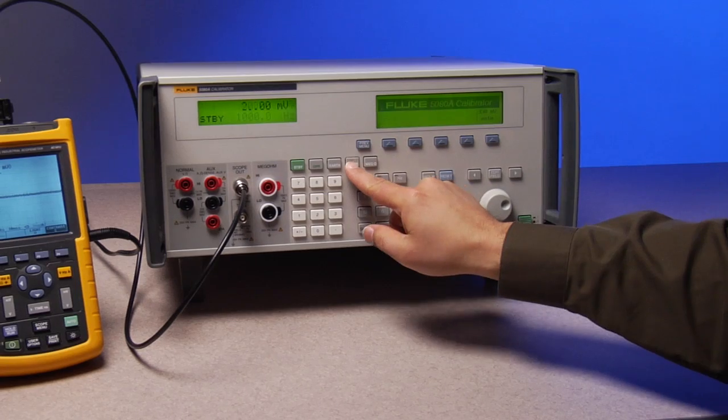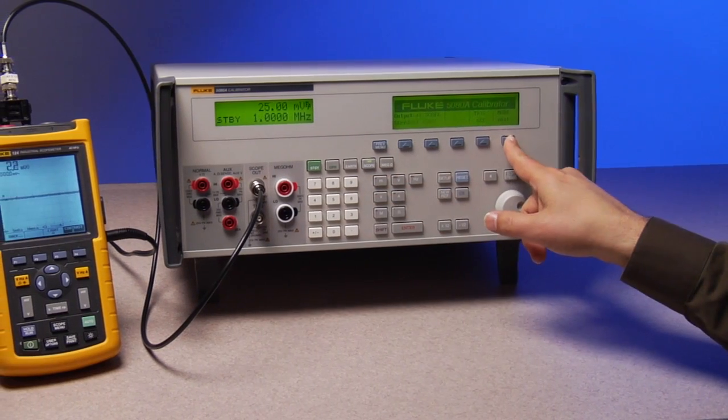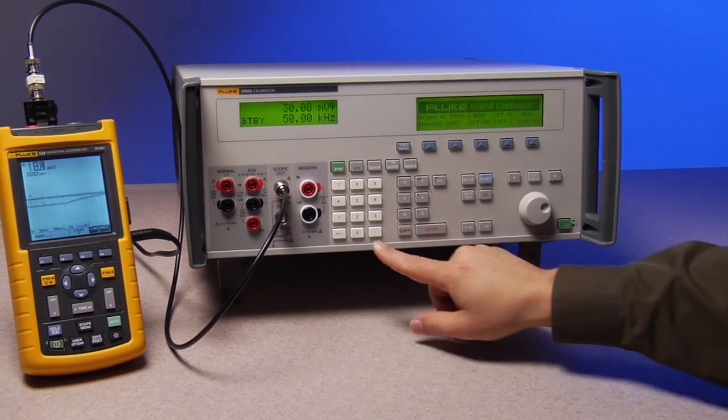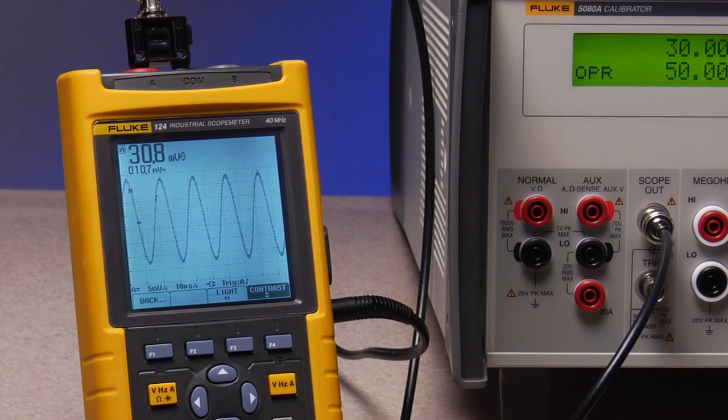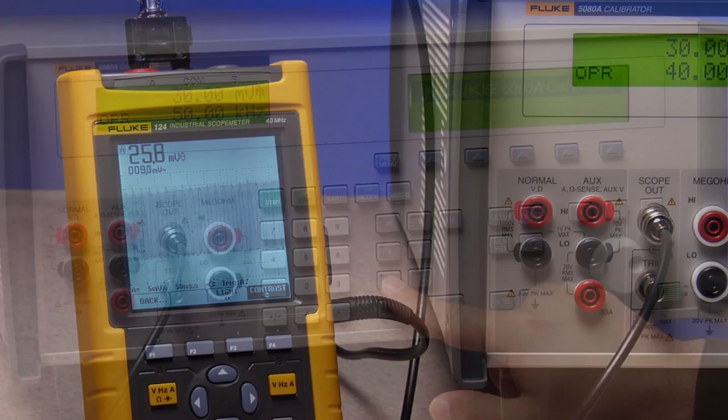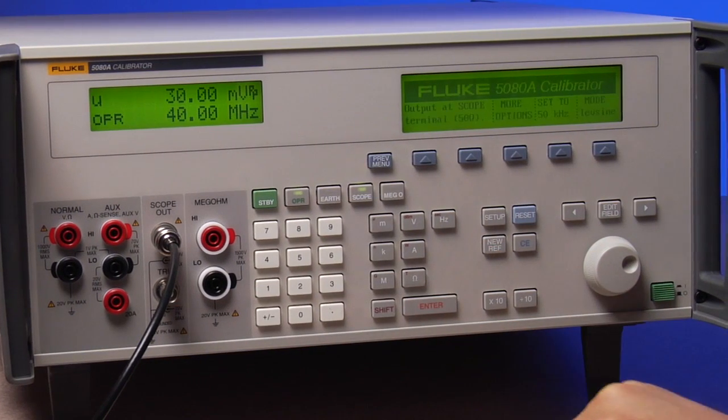The oscilloscope calibration option calibrates oscilloscopes to 200 megahertz quickly, easily, and cost effectively. Verify dynamic response, bandwidth, timing, multiple triggering functions, and input resistance with a push of a few buttons.